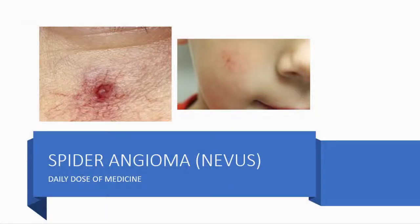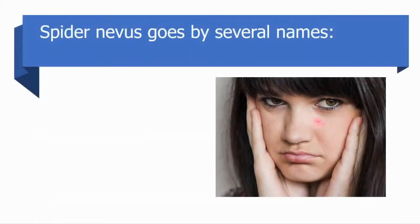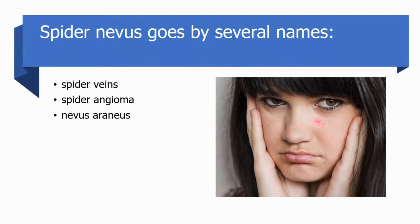Hello, welcome or welcome back to Daily Dose of Medicine. In this video we are going to discuss spider angioma. Spider nevus goes by several names such as spider nevus, spider veins, spider angioma, and nevus araneus — araneus means spider in Latin — vascular spider.